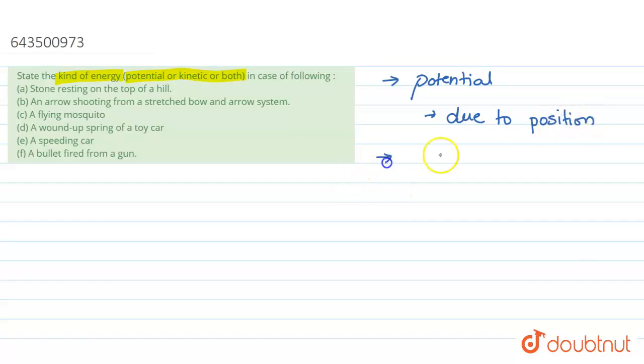And what is kinetic energy? Kinetic energy is due to movement, the energy that a body possesses due to its movement from one place to another. So these are the two types of energy that we have to check here.